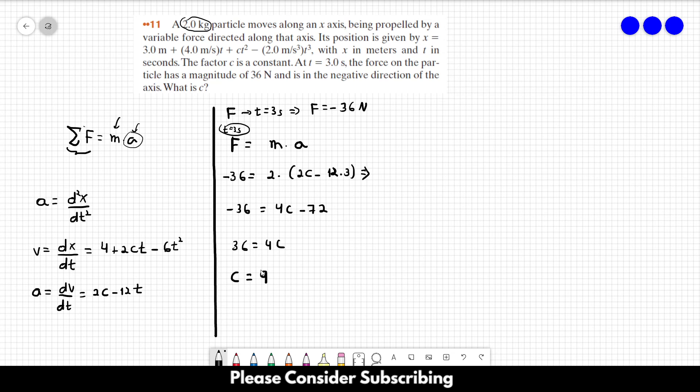And this is the absolute value. We have to find its unity. So let's see. We have this term, which is ct squared. And this should give us position. So this should give us meters.